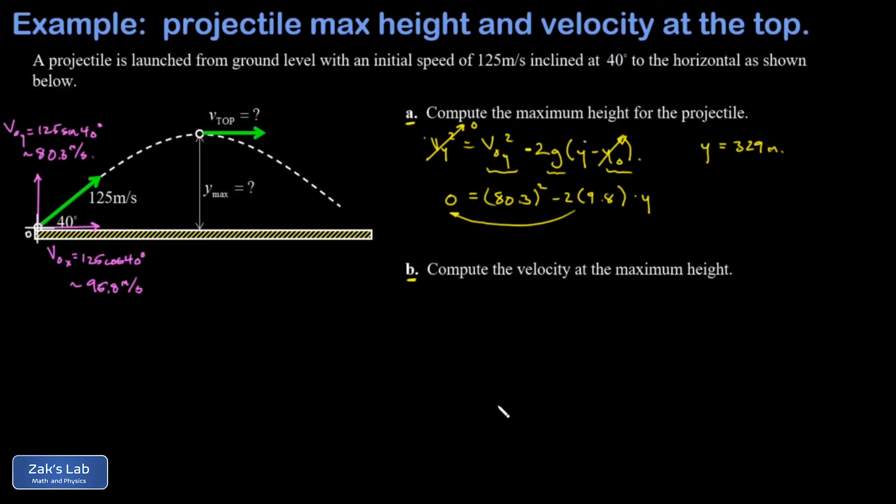And in projectile motion that never changes. Vx is always equal to the original value of the x velocity. And so my speed at the top of this trajectory is going to be 95.8 meters per second. That was the unchanging magnitude of the x component of the velocity.